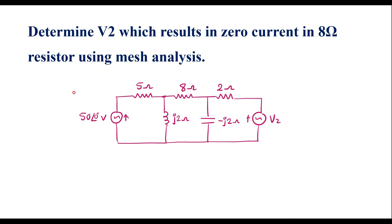In this video, I will consider one numerical on loop analysis or mesh analysis. Determine V2 which results in zero current in the 8 ohm resistor using mesh analysis. This is the given circuit. Here we are supposed to calculate V2 which is unknown, and it is also said that the current through the 8 ohm resistor is zero. We are supposed to solve it using mesh analysis.